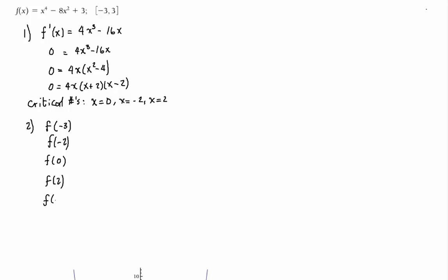In this particular case, notice how all the critical numbers actually lie inside of this interval between -3 and 3. By the way, this is where the -3 and the positive 3 came from.